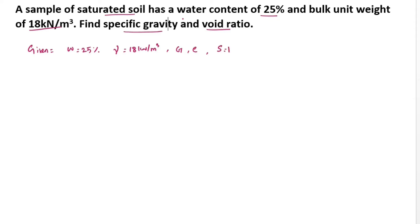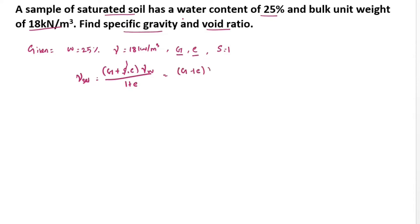Now we can find out the G value and E value using the relationship: gamma saturation equals (G plus S into E) into gamma W, divided by 1 plus E. Since the soil is fully saturated, S equals 1, so this simplifies to: gamma saturation equals (G plus E) into gamma W, divided by 1 plus E.